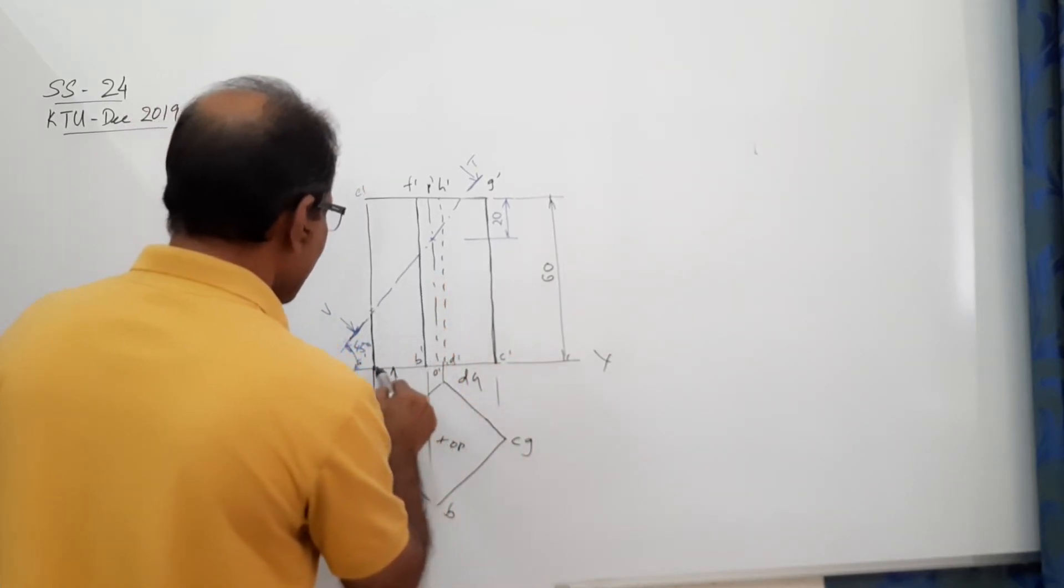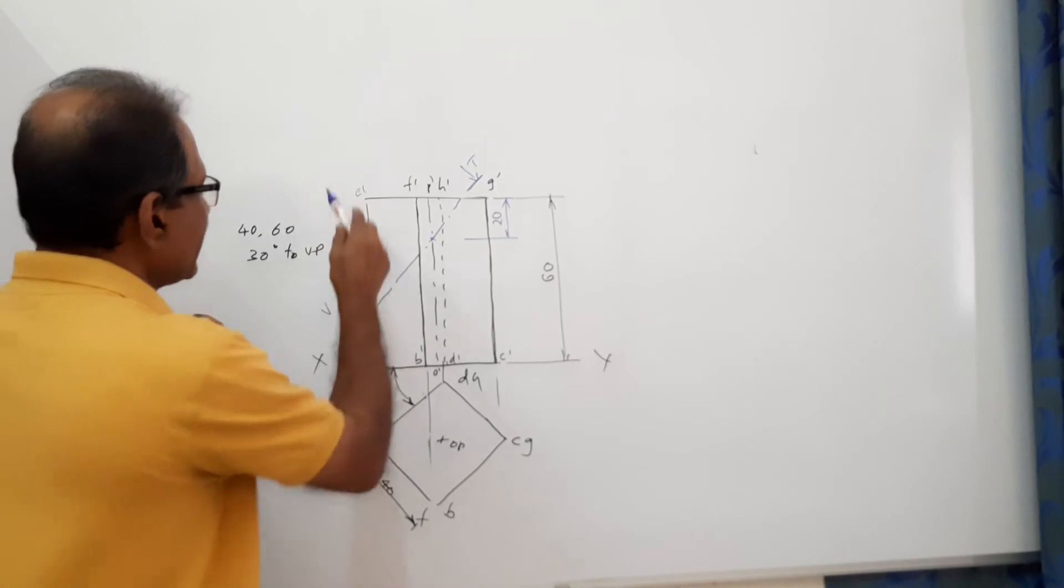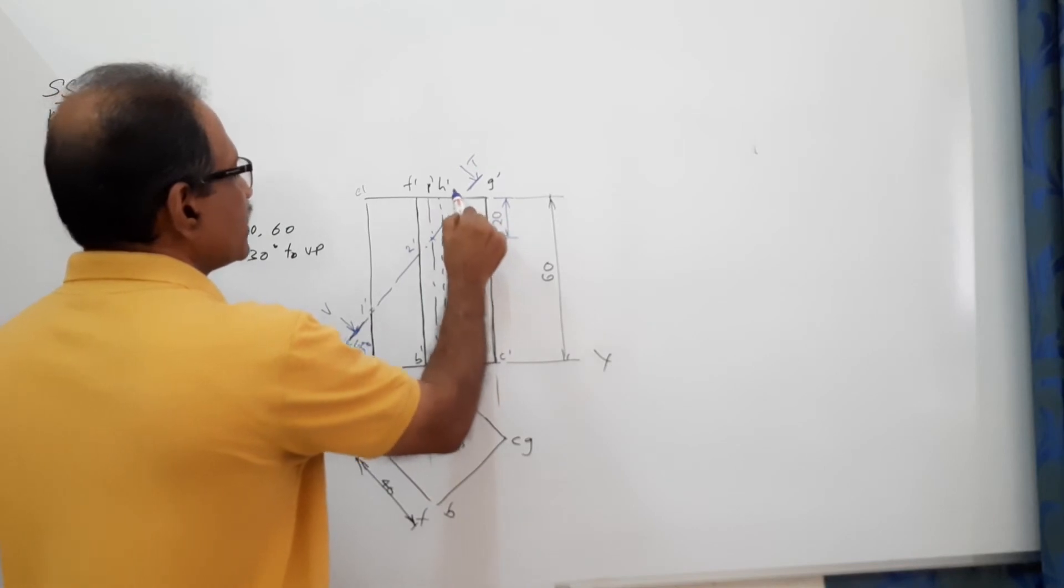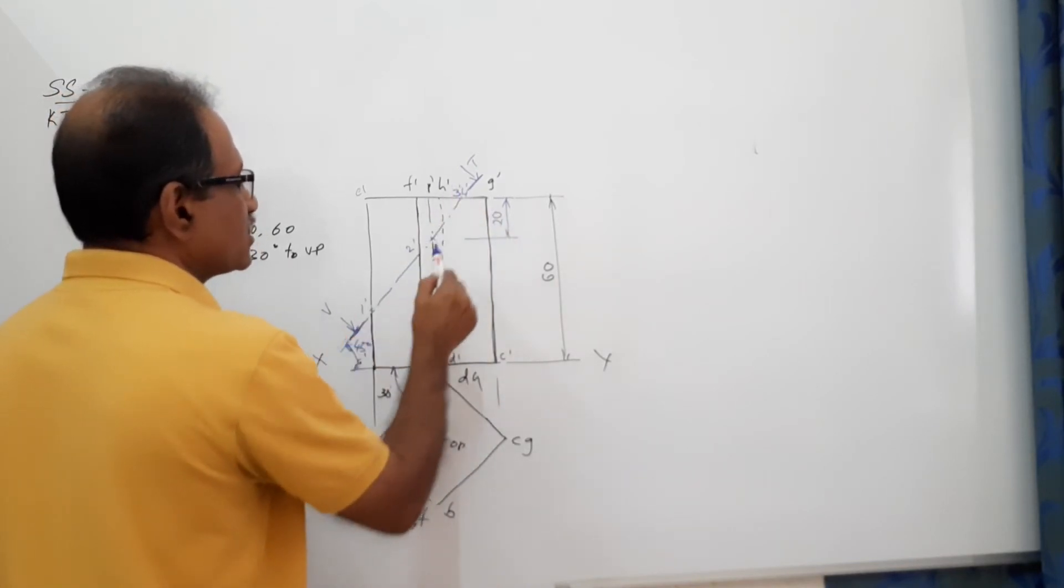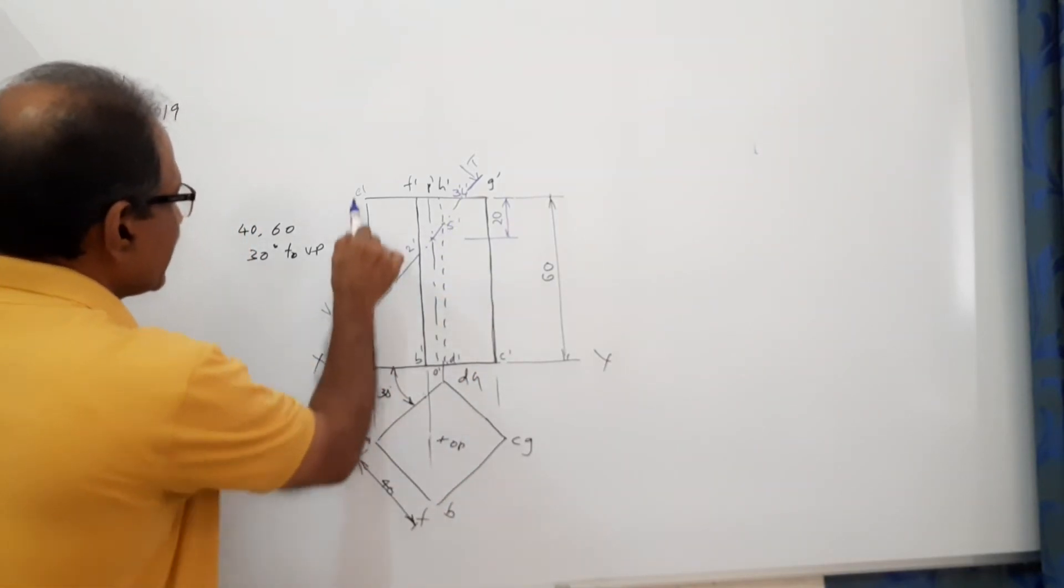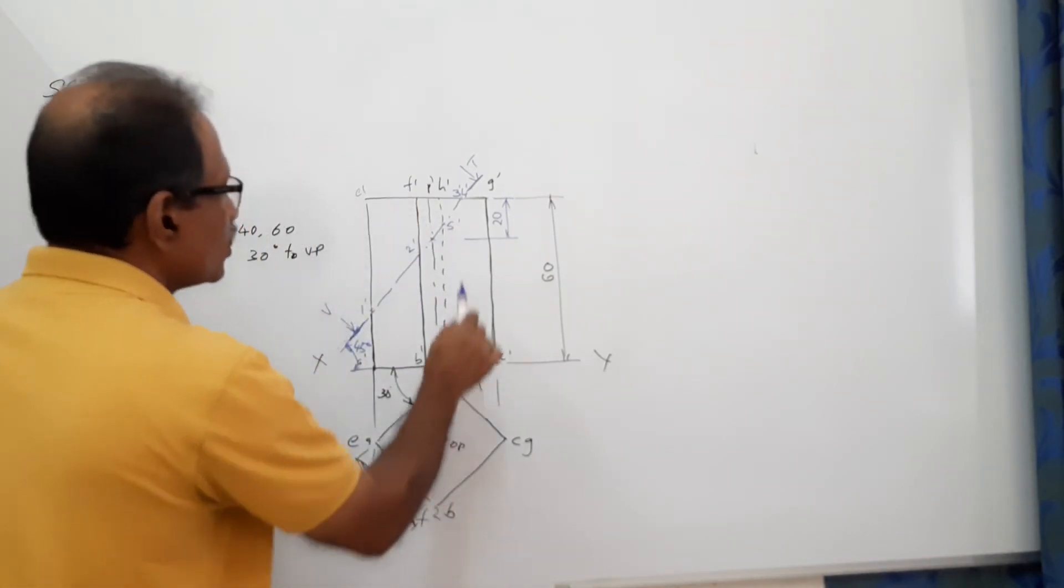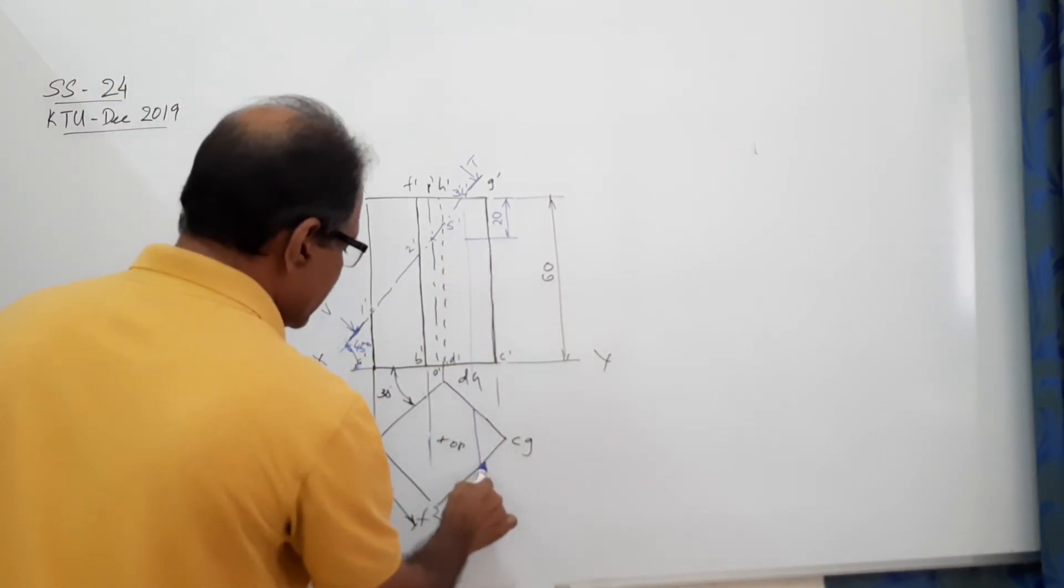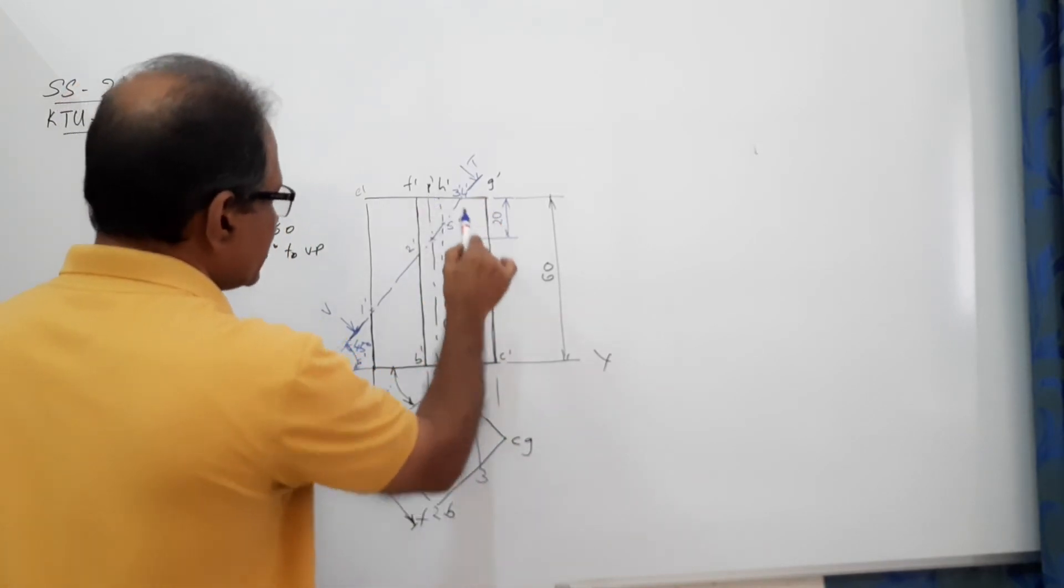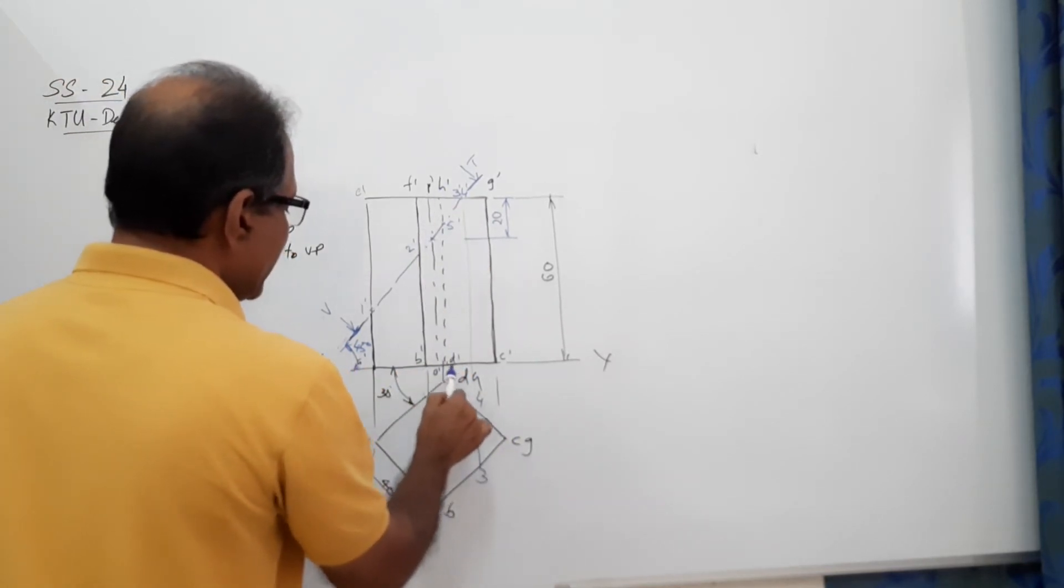Where does it cut? It cuts A-dash E-dash at one-dash, B-dash F-dash at two-dash, the top at three-dash and four-dash - two points, D-dash H-dash at five. Five points. Get them in the plan: A-dash E-dash has got one-dash, so AE has got one. B-dash F-dash has got two-dash, so BF has got two. Three-dash and four-dash you drop down, you get three and four. Three on FG, five on DH. Hatch this portion.